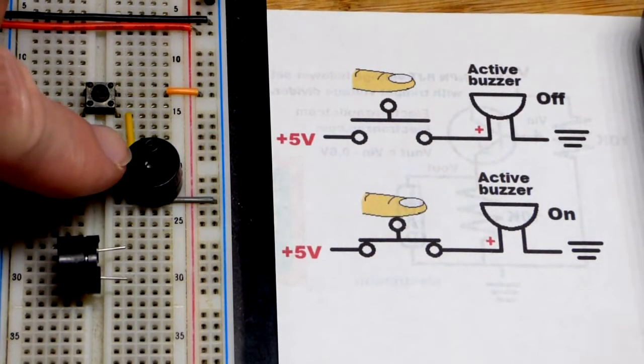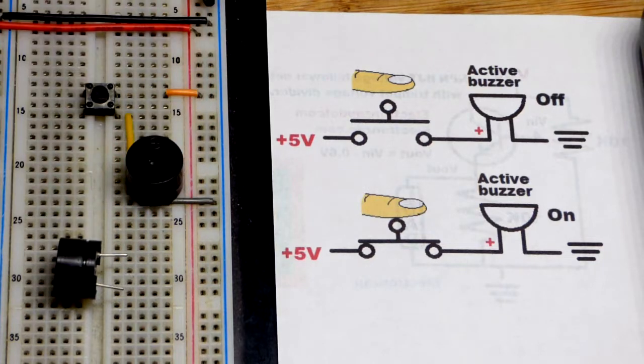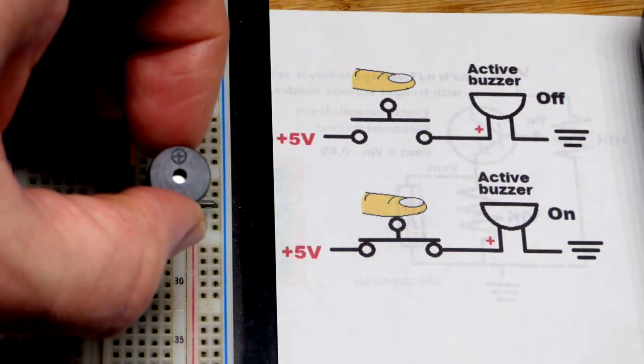In this video, we're going to take a quick look at the active buzzer. These buzzers, the active in the past, tend to come in component kits pretty often. So you probably have one of these if you have a component kit.